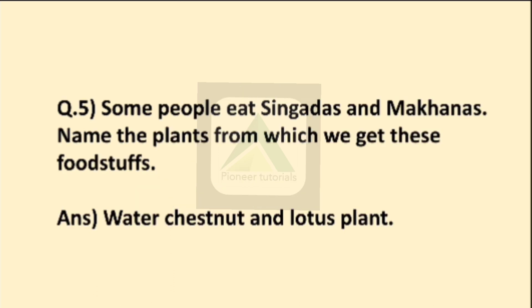Question number 5: some people eat singadas and makhanas — name the plant from which we get this foodstuff. The answer is water chestnut and lotus plant.